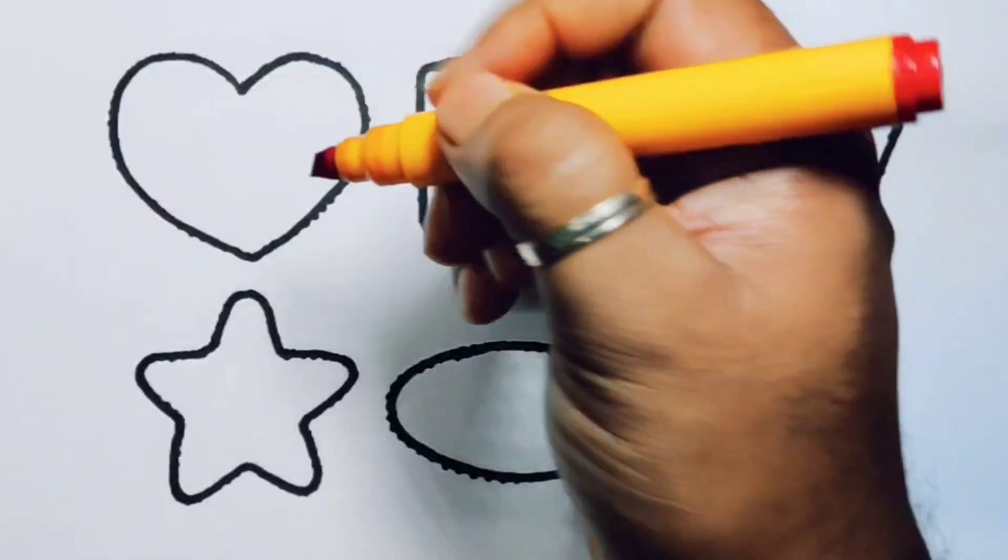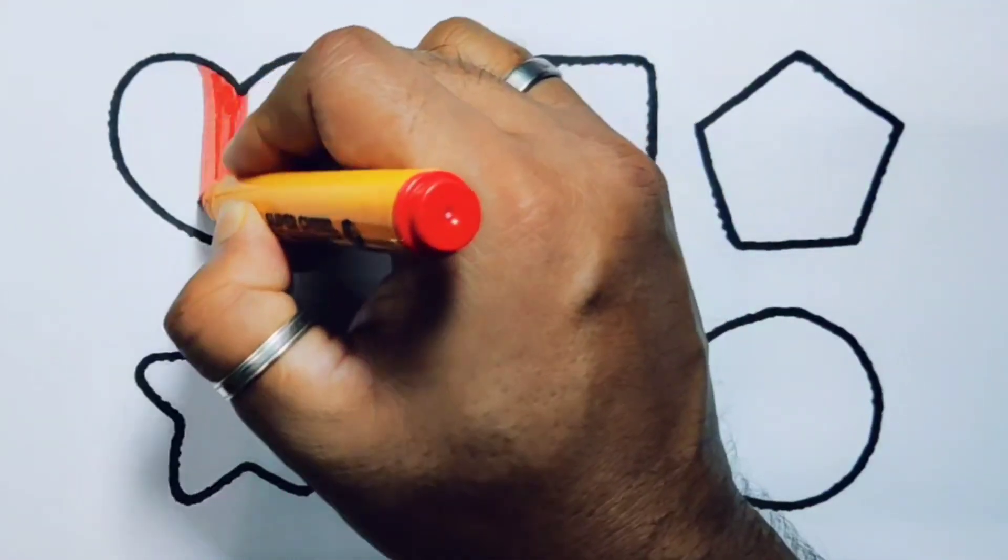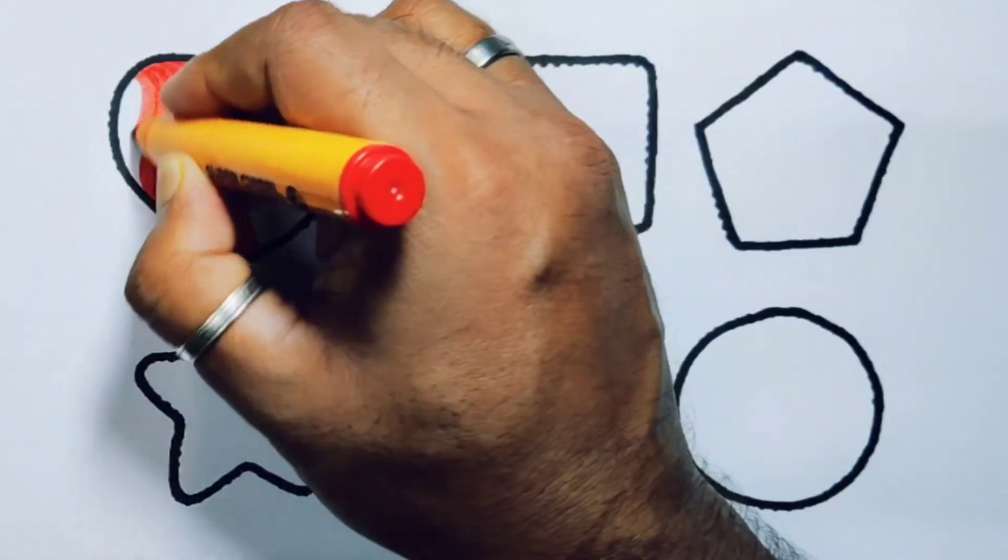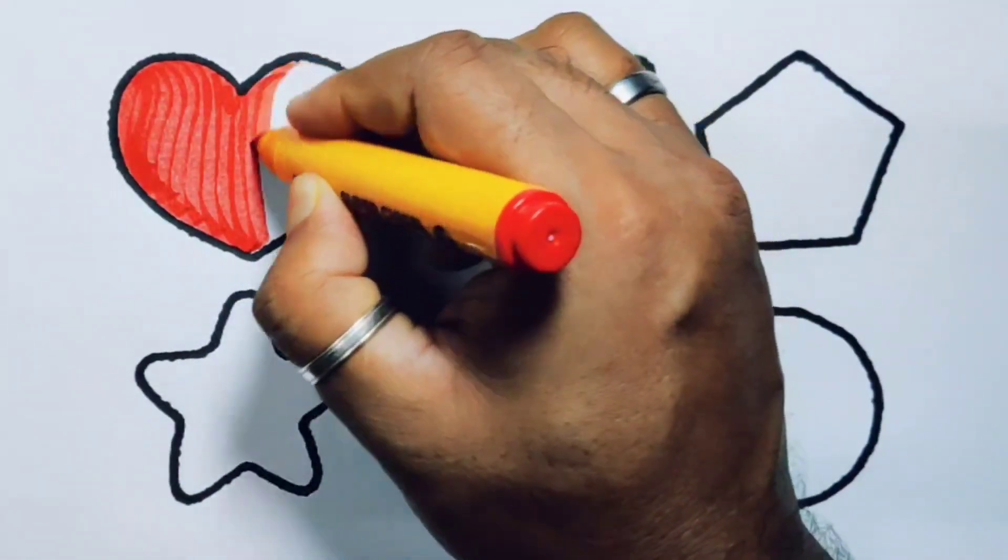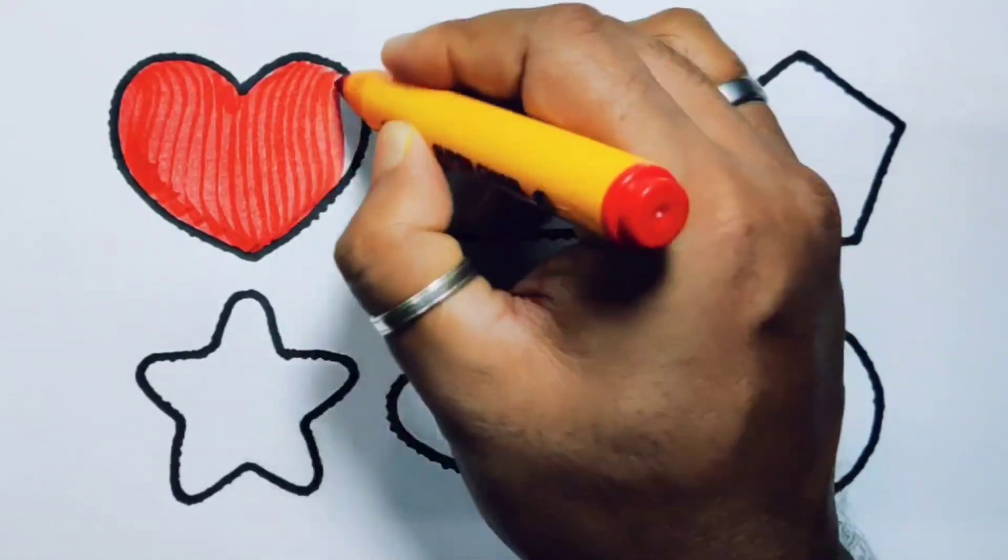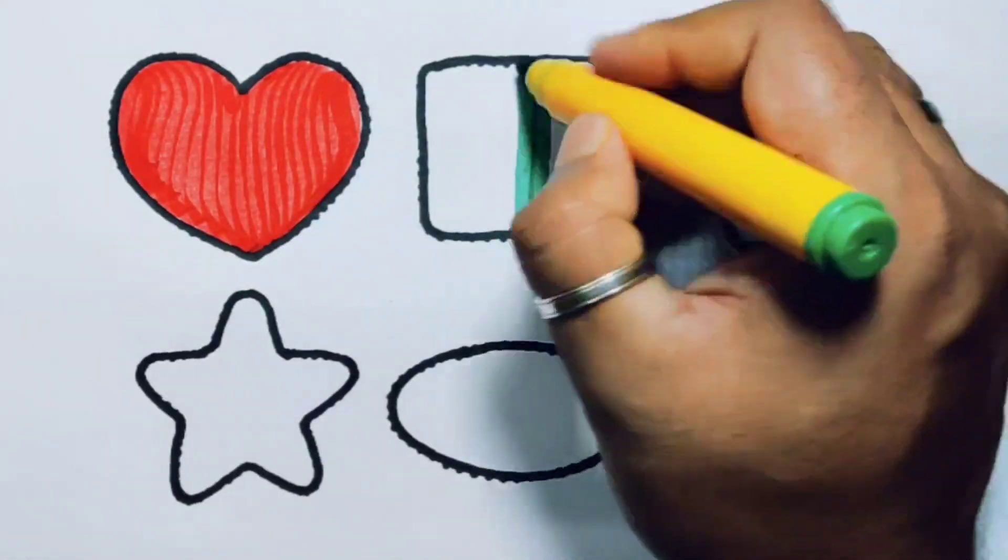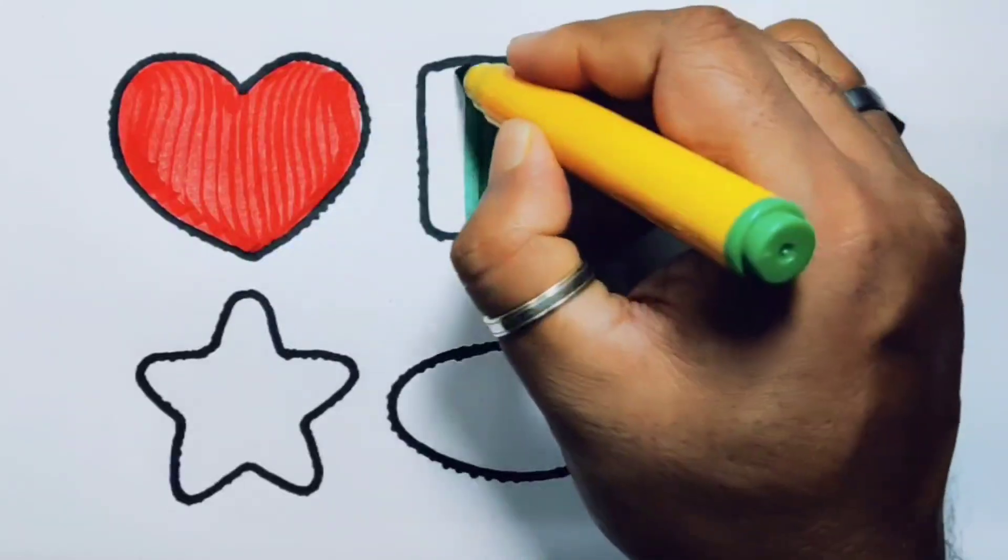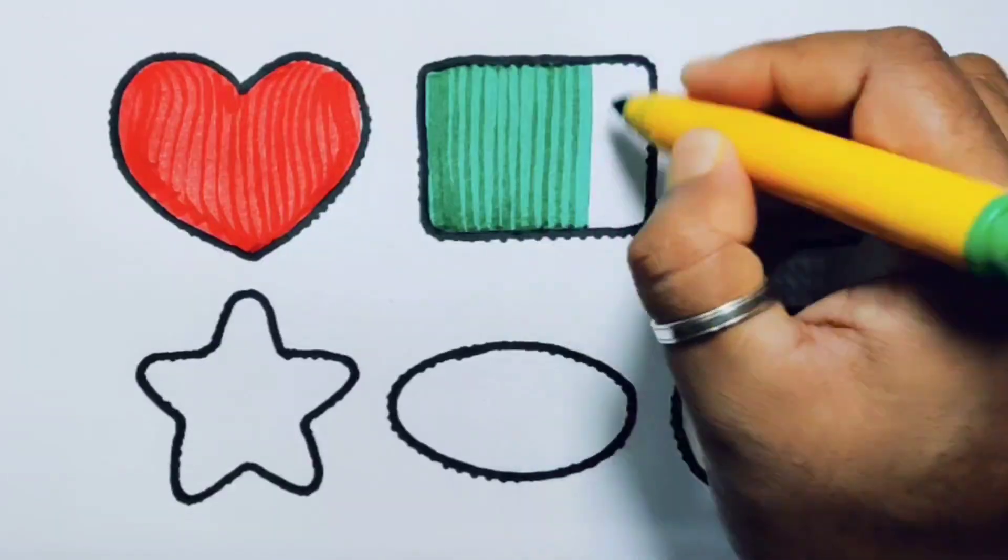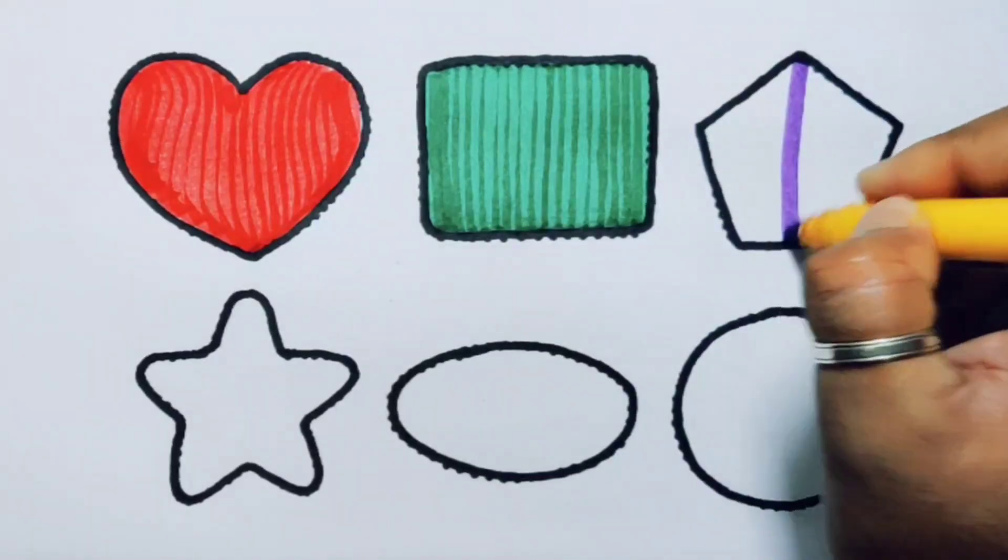Now we are going to put the color. Red color, heart. Green color, rectangle. Purple color, pentagon.